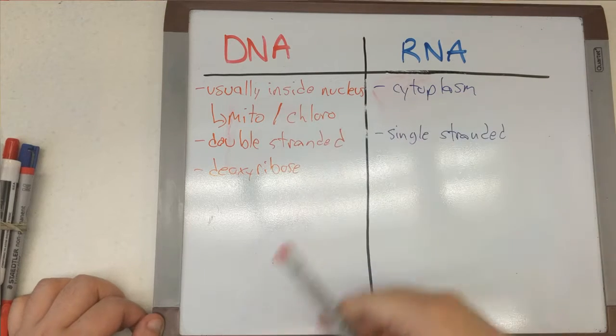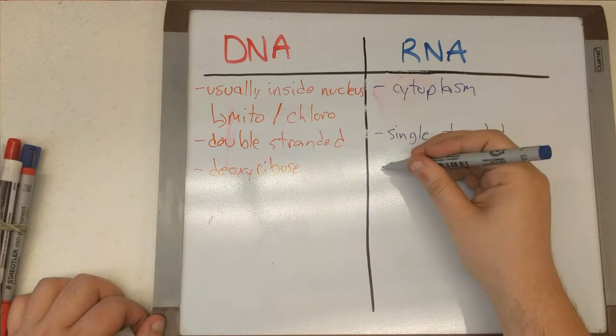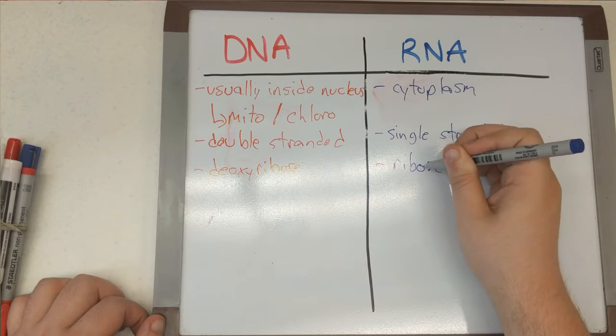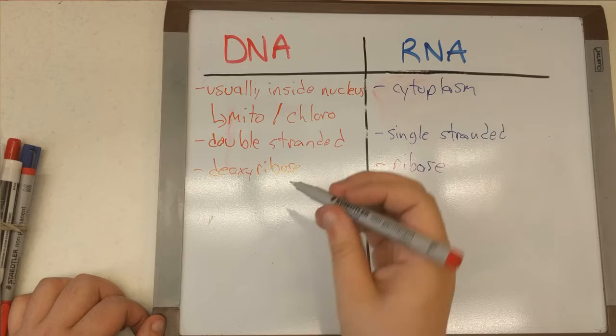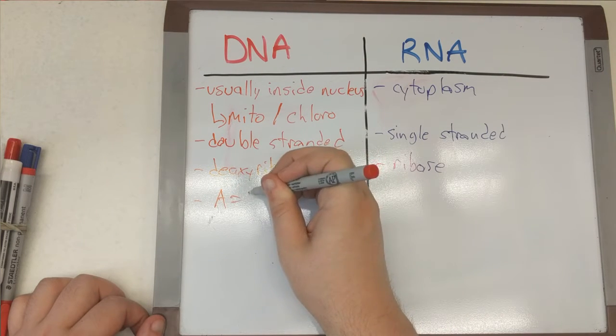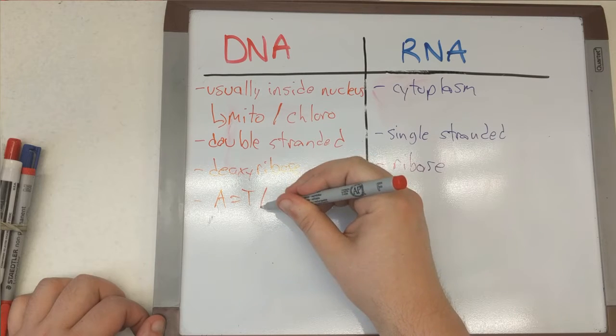So DNA has deoxyribose, which means that the sugar that is on there is actually missing an oxygen, which means DNA is more stable. RNA, on the other hand, has oxygen on the sugar, so we just call it ribose instead of deoxyribose, and this makes RNA more reactive.